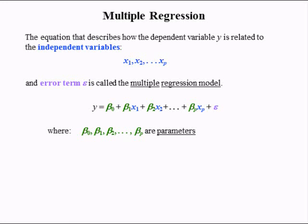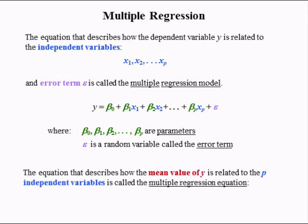In most cases, you will never know the betas. Epsilon is a random variable called the error term, and in most cases you'll never know the error terms. The equation that describes how the mean value of y is related to the p independent variables is called the multiple regression equation, which is the expected value of y equal to beta 0 plus beta 1 times x1 plus beta 2 times x2 plus beta p times xp. Notice that the error term is gone because the expected value of the error term is equal to 0.